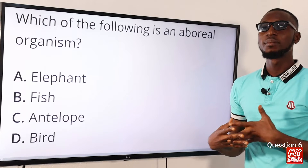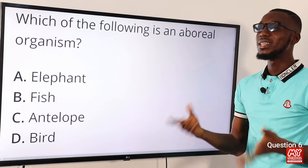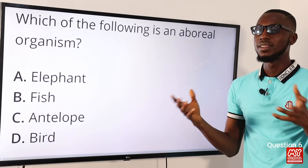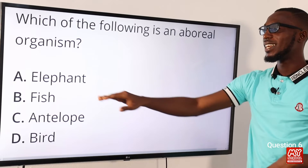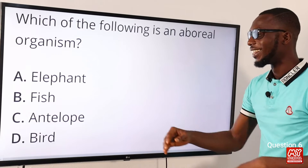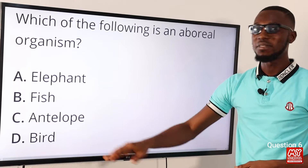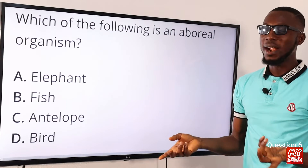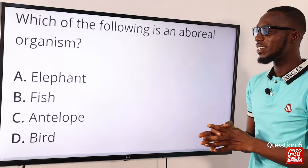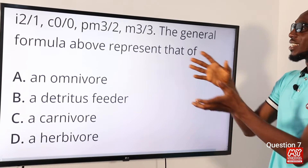Question six: which of the following is an arboreal organism? Arboreal typically refers to animals that spend most of their time on trees. Elephants are terrestrial, fish are aquatic, antelope are terrestrial. Birds — such as parrots — spend time on trees. So the correct option is option D for birds.